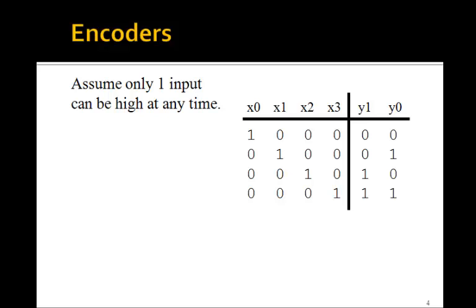So we assume only one input can be high at a time, either x0, x1, x2, or x3. In this case, the logic equations for y1 and y0 simplify, because we don't need the entire min term.